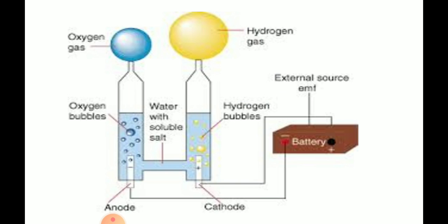This photograph shows photolysis of water — how water can be separated by passing electric current. Instead of electric current, we can perform photolysis of water with the help of microorganisms to produce hydrogen gas. This hydrogen gas can be stored, similar to how petrol is stored at a petrol pump — we can have hydrogen gas pumps and store the gas in tanks for further use.